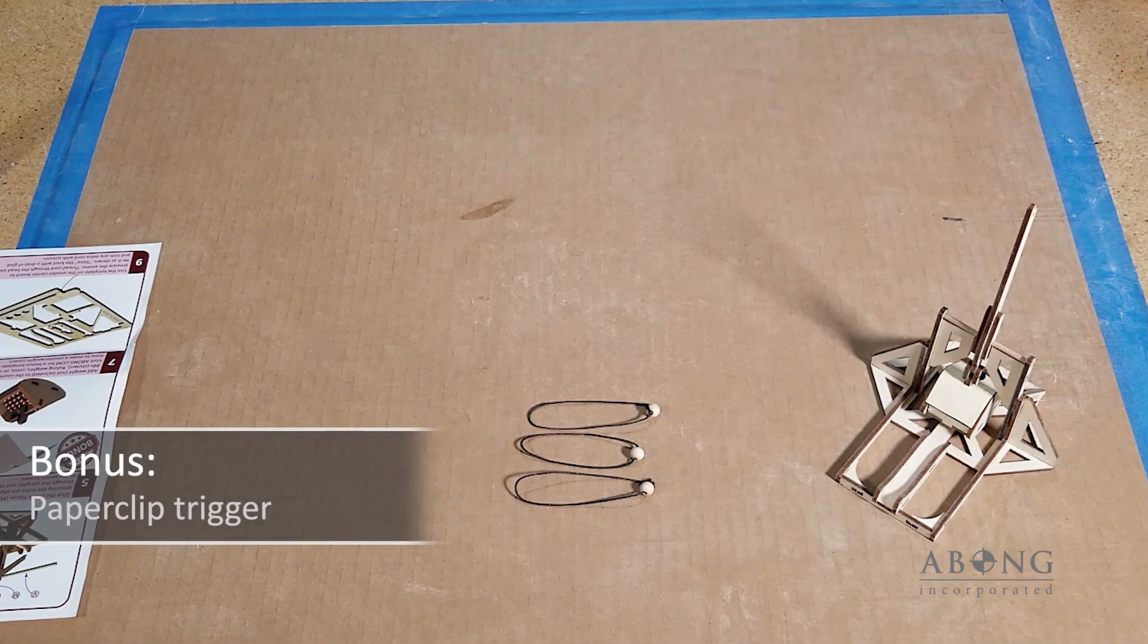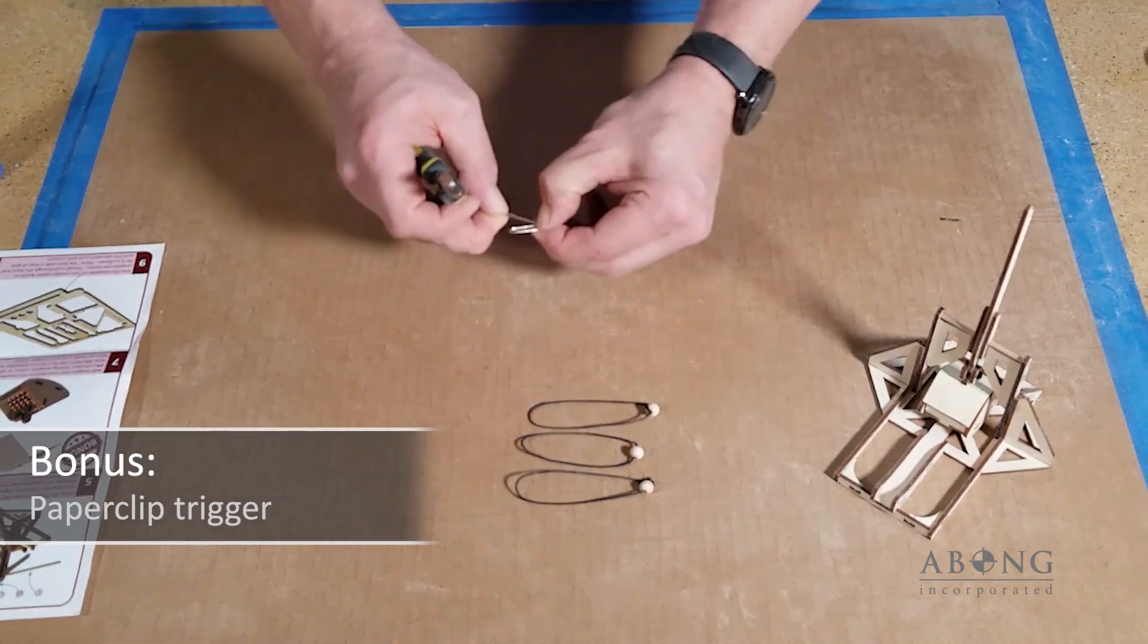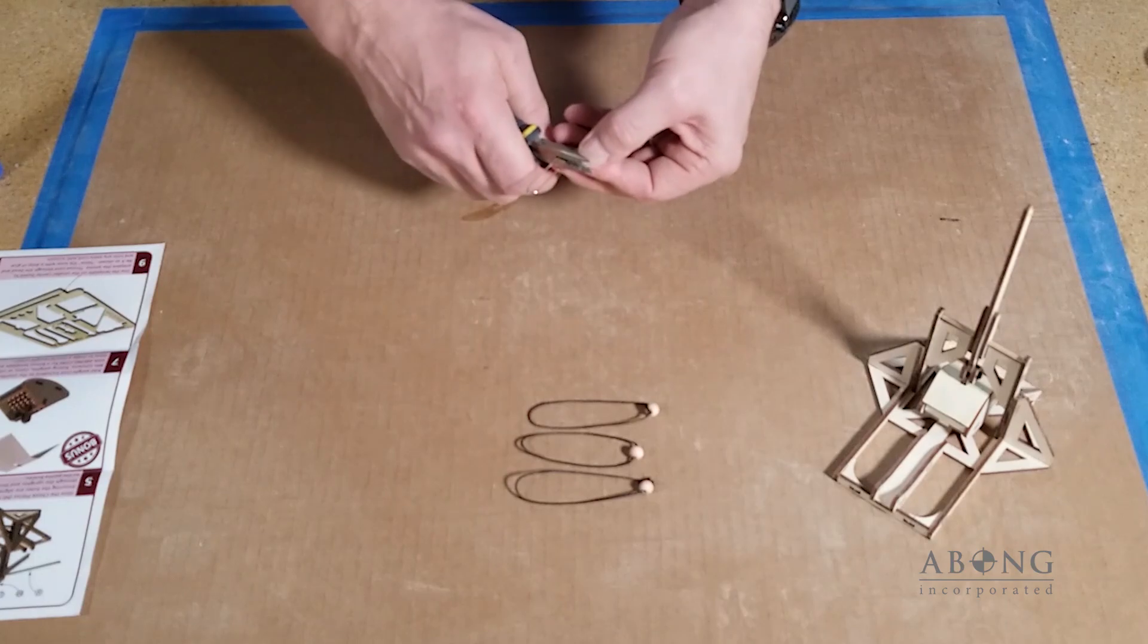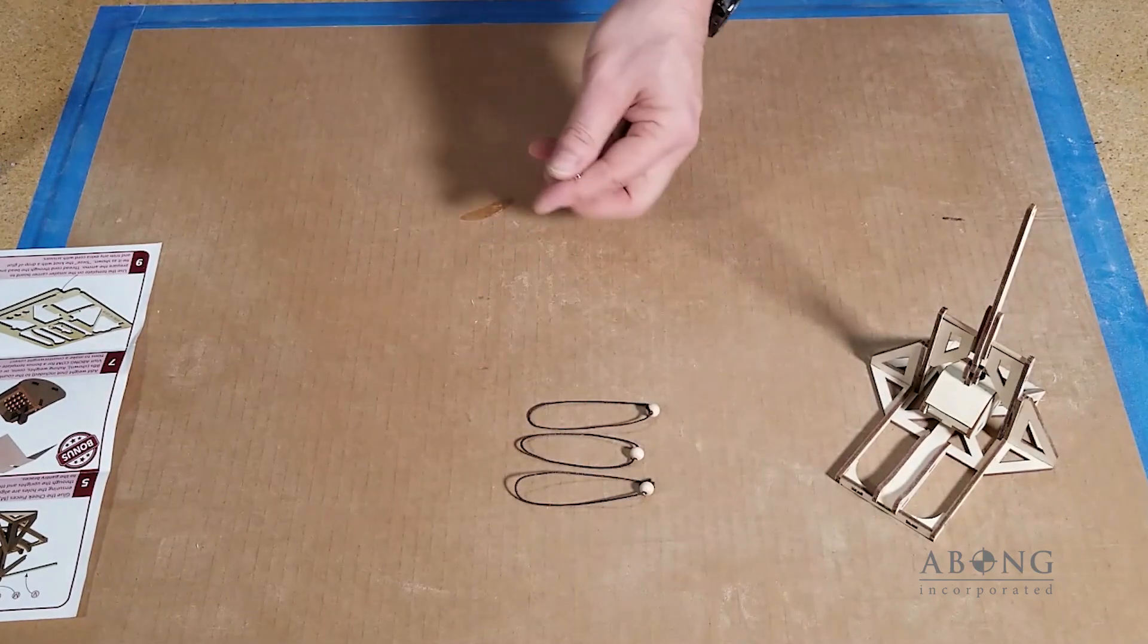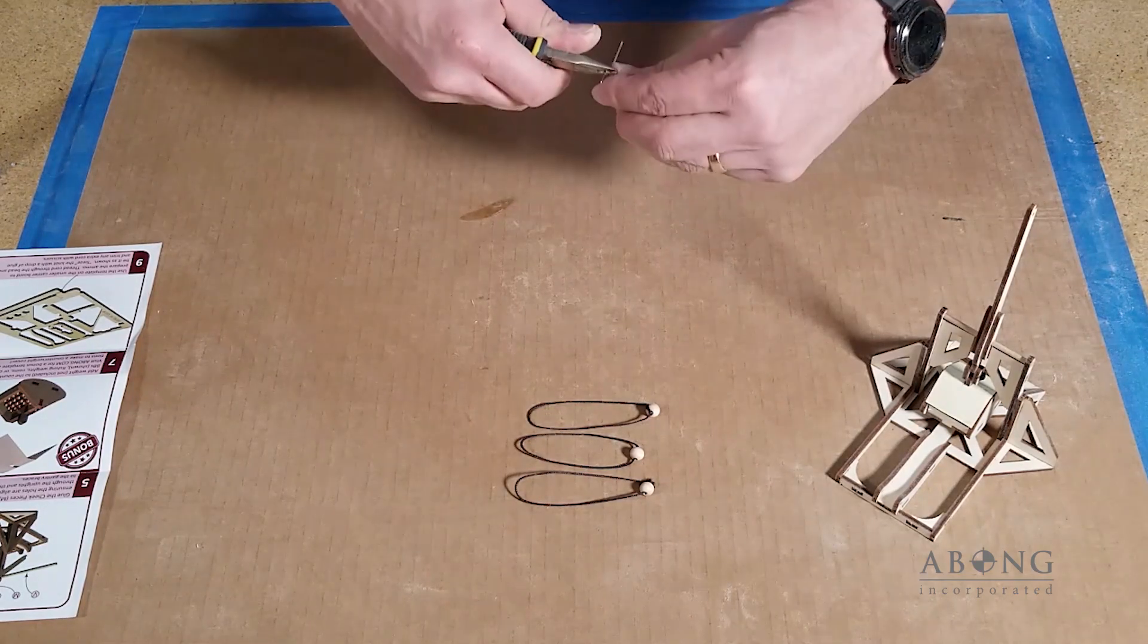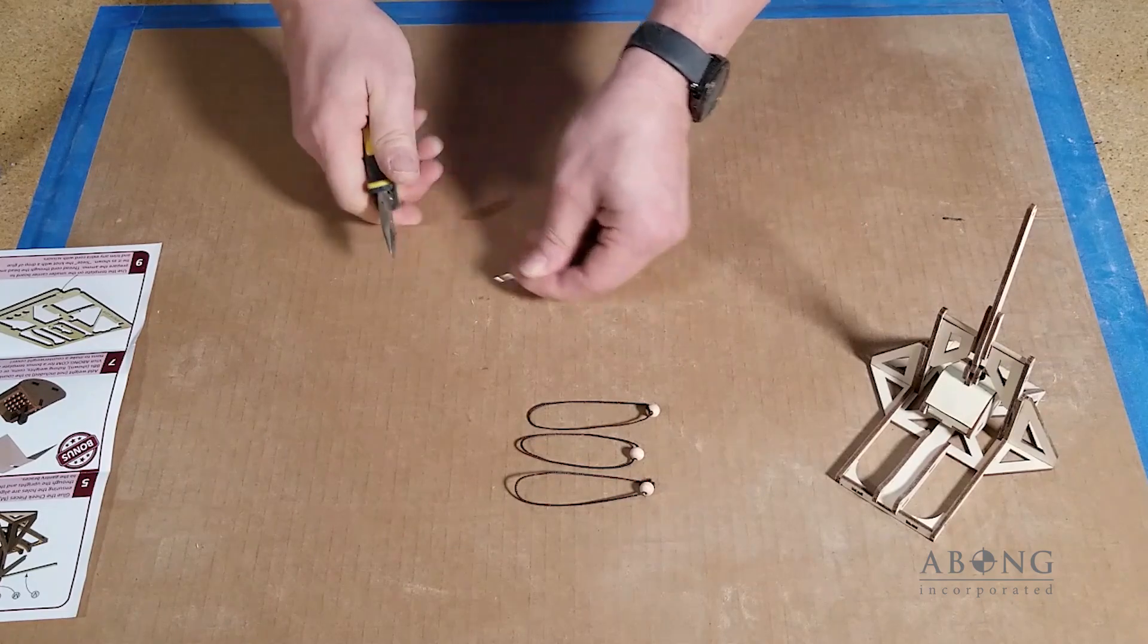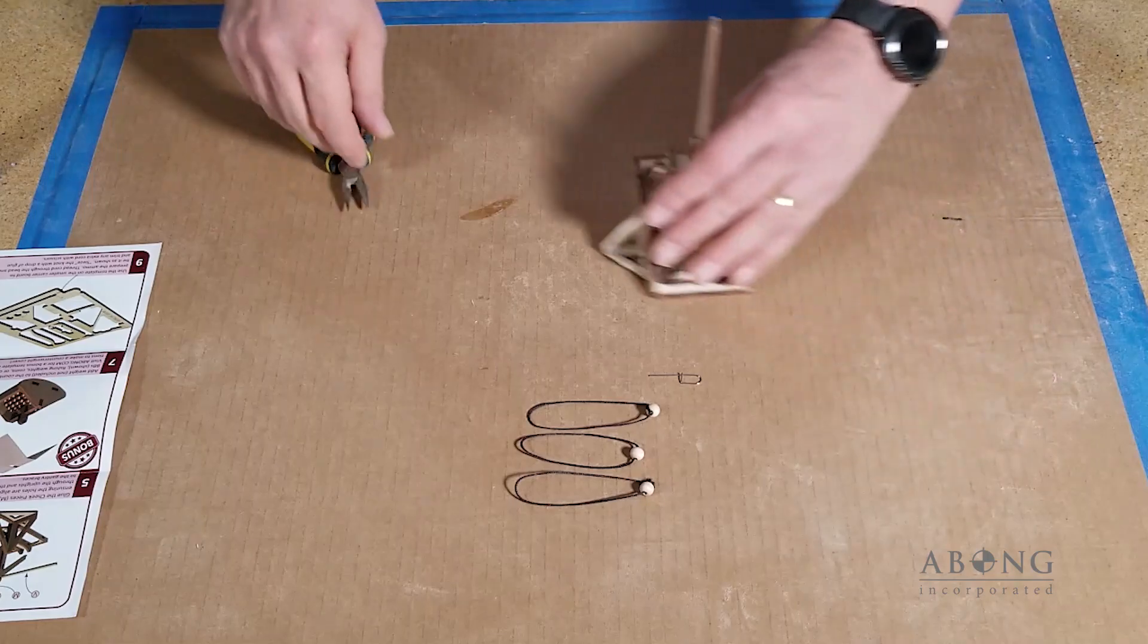So the trigger pin's just an ordinary paper clip. Unfold it. Snip off the short end. You can throw away the other part. And just form a little D into the end of the clip. And then you can trim off once everything's nice and square there, you can trim off the excess. And you have just a little pin that works as a trigger for the trebuchet.